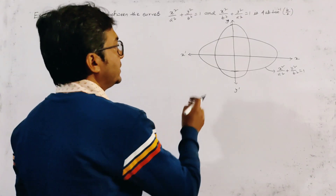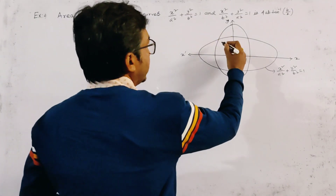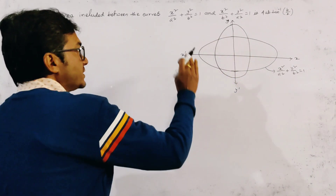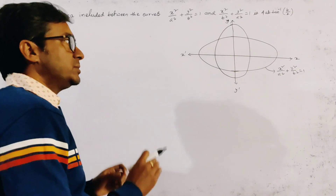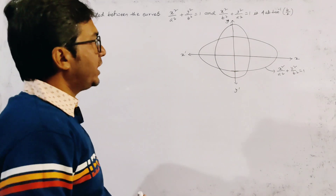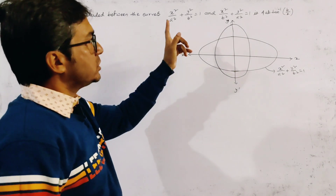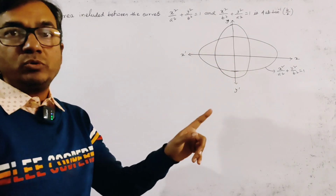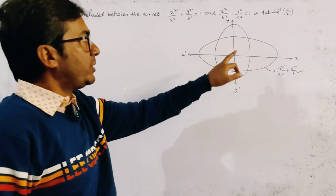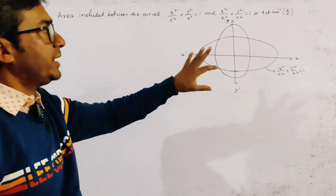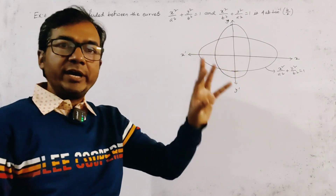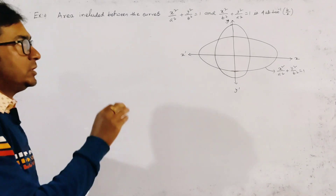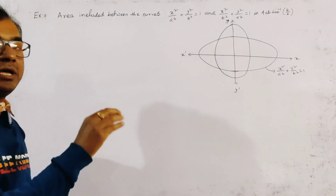It is clear that the area included between the two curves lies in all four quadrants. Since the two curves are symmetric about the x and y axes, the included area is also symmetric in all four quadrants. So if we find the area in the first quadrant and multiply it by four, we get the total included area. So we try to find out the included area in the first quadrant.